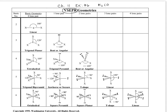I provided this chart to you from Washington University. Let's go ahead and draw the Lewis structure for the H2CO molecule we had in the previous problem. It was a carbon with a double bond to the oxygen and we have our hydrogens.